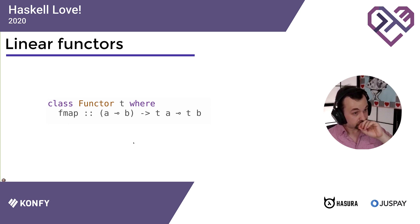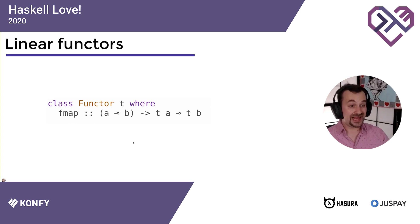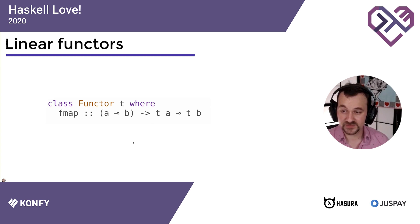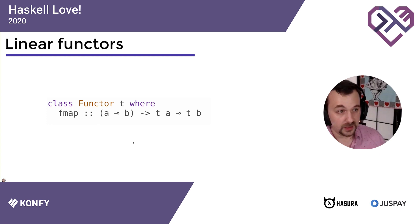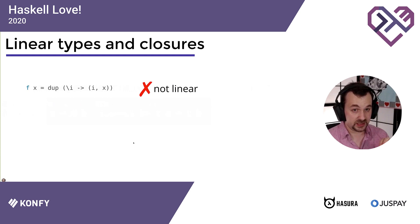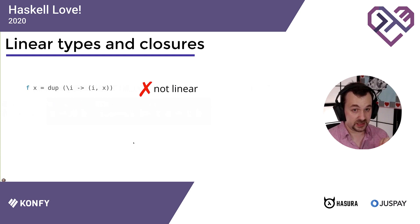Functor: fmap's type is just a generalization of the type of map for lists. Because we know the type of map for lists, we already have a type for Functor in the world of linear types. This is the type of Functor with linear types — it's linear on the second argument but not the first. I want you to focus on this; it's really the most important slide.